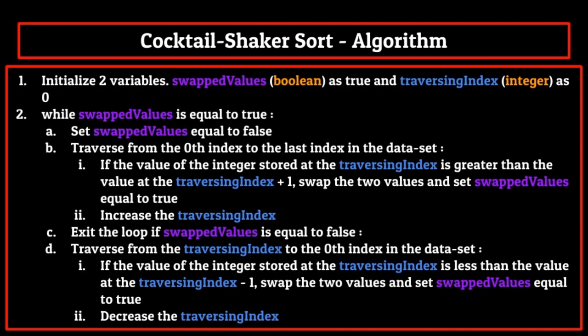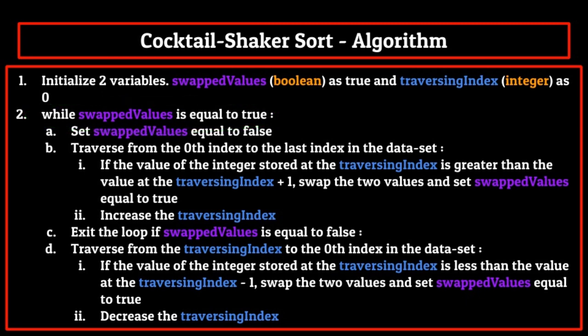After that, believe it or not, our code is complete. Once the code runs and we can traverse back and forth through our list without swapping any values, we know that the list is sorted and we can exit the algorithm. This is done using our swapped values boolean. Any time we swap two values in our pseudocode, we set this boolean equal to true, and at the beginning we encased everything in a while statement which only runs while that variable is true. Once we go through the list without setting that variable to true by swapping values, we can be 100% sure the list is sorted and exit the algorithm.